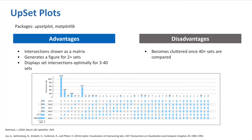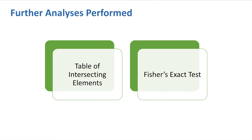In this upset plot, we can see that comparing 6 sets is very clear and informative in contrast to the 5-set Venn diagram we looked at previously. After the user decides which visualizations they would like to use, the Aperture performs further analyses on the intersections by generating a list to display the intersecting elements and sending them to Enrichr, as well as performing Fisher's Exact Test.